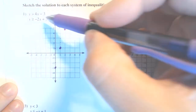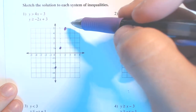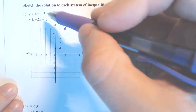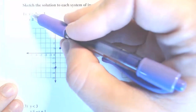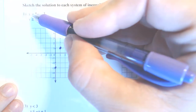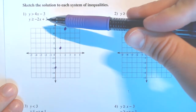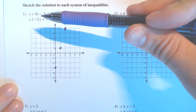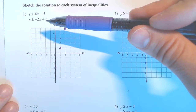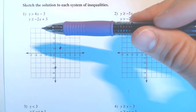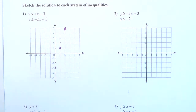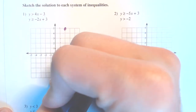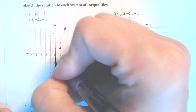Now we need to be careful before we draw that line — we need to make sure that it is in fact supposed to be a solid line. And in this case, it's not. If it does not have the equal sign underneath, it is not going to be a solid line. So I am not going to include a solid line here. I'm just going to do a dashed line.